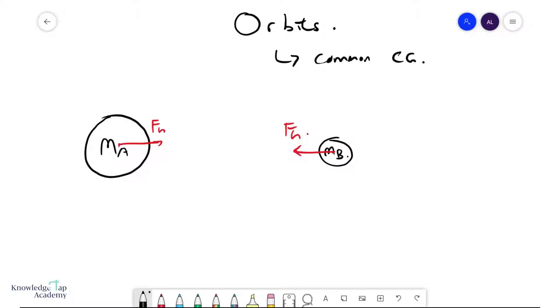And then this common CG is likely to be closer to the larger mass, so let's just put it there. And so the orbital radius of ma will be as such, let's call this ra, and the orbital radius of b will be as such, let's call this rb.